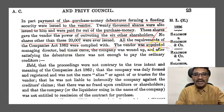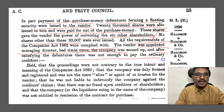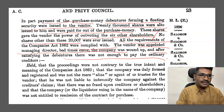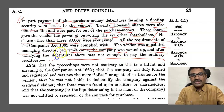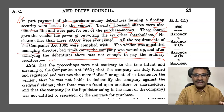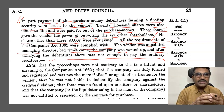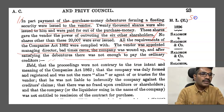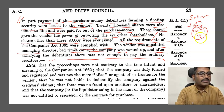The vendor was appointed as the managing director. Then bad times came. The company wound up, and after satisfying the debentures, there was not enough to pay the ordinary creditors. Now let us have a discussion on this, because we are finding out very important terminology of corporate law. Mr. Solomon and his six family members — wife, four sons and one daughter — totally seven members brought the business into the company.